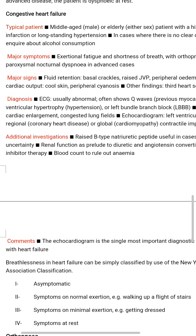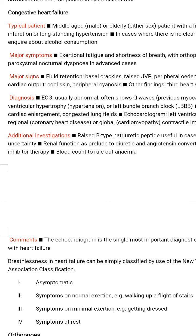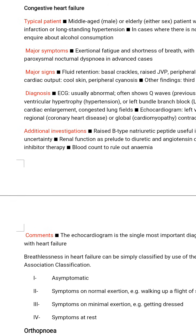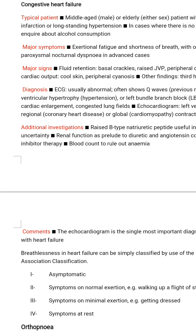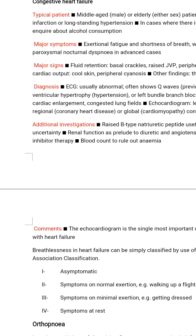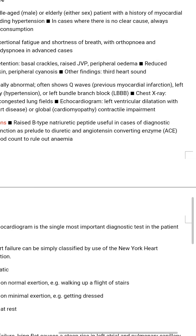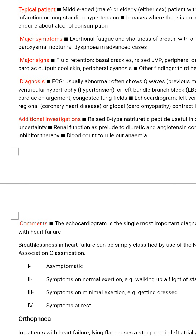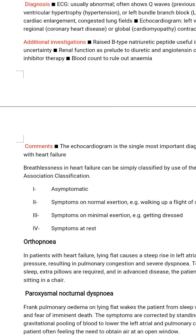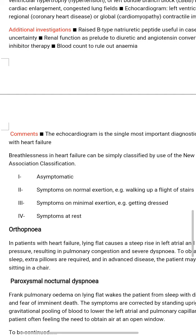Diagnosis: chest X-ray shows cardiac enlargement and congested lung fields. Echocardiogram shows left ventricular dilatation with regional wall motion abnormality (coronary heart disease) or global cardiomyopathy with contractile impairment. Additional investigations: raised B-type natriuretic peptide (BNP), useful in cases of diagnostic uncertainty; renal function as a prelude to diuretic and ACE inhibitor therapy; blood count to rule out anaemia. Comment: the echocardiogram is the single most important diagnostic test in the patient with heart failure.